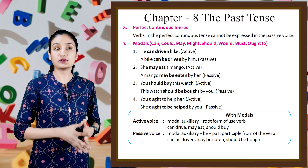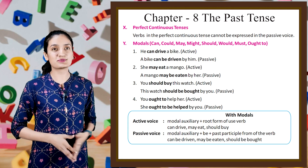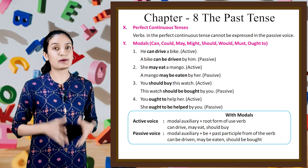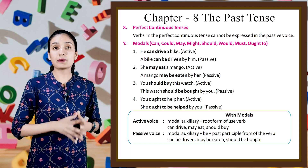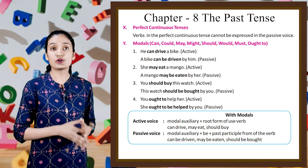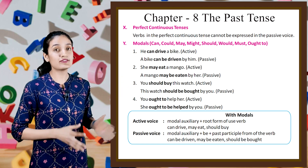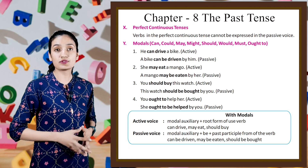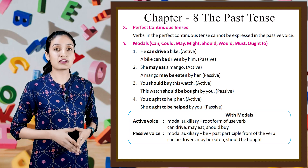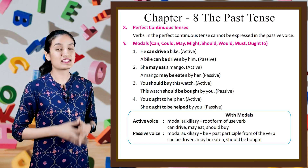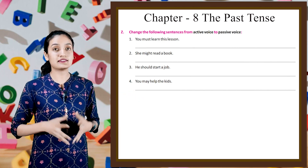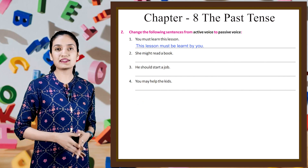Next is modals: can, could, may, might, should, would, must, ought to. Examples: 'He can drive a bike' (active) — 'A bike can be driven by him' (passive). 'She may eat a mango' (active) — 'A mango may be eaten by her' (passive). 'You should buy this watch' (active) — 'This watch should be bought by you' (passive). 'You ought to help her' (active) — 'She ought to be helped by you' (passive). With modals, active voice uses modal auxiliary plus root form of the verb; passive voice uses modal auxiliary plus be plus past participle. Example: 'You must learn this lesson' becomes 'This lesson must be learnt by you.' Do the rest by yourself.